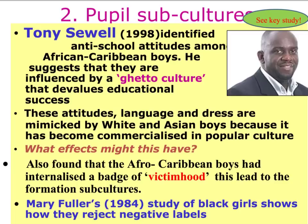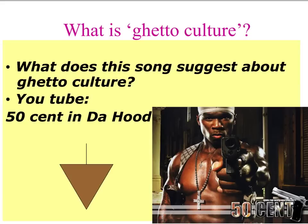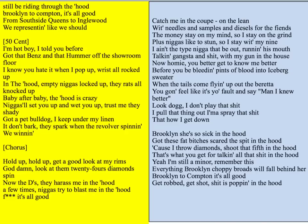You can always evaluate labelling theory or any theory that subcultures lead to failure of ethnic minorities by using Mary Fuller's study of black girls, where she showed that these black girls rejected the negative label of the teacher and actually succeeded educationally — not to prove the teacher wrong or gain approval, but because they wanted to do well, forming their own pro-school subculture. There are also song lyrics on the next slide — please identify examples of ghetto culture that devalue education and consider other routes to success suggested in the song.